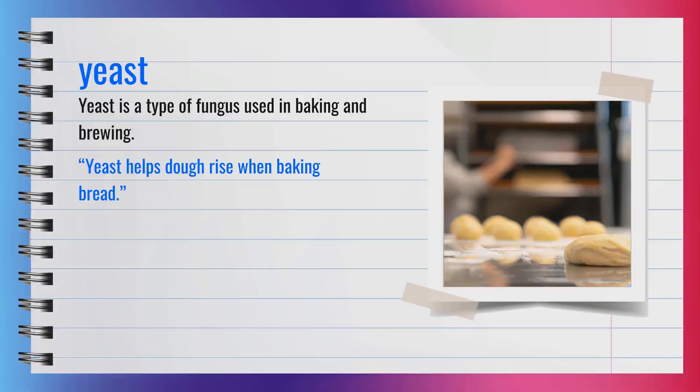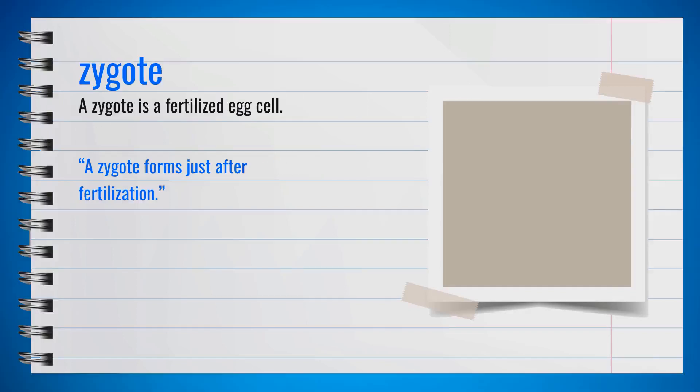The word yeast, spelled Y-E-A-S-T, is a noun. Another term for yeast is leaven. Yeast helps dough rise when baking bread. In summary, yeast is a type of fungus used in baking and brewing.